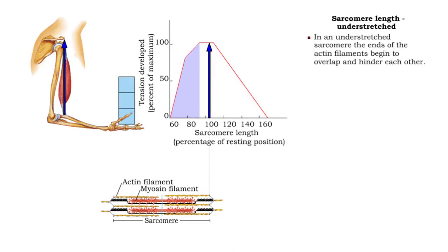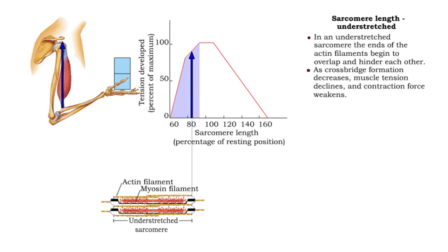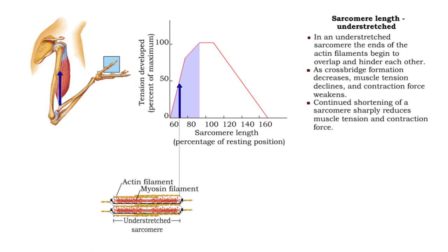In an understretched sarcomere, the ends of the actin filaments reach beyond the midpoints of the myosin filaments toward myosin heads that face in the wrong direction. This hampers the potential for crossbridges, reduces muscle tension, and weakens contraction force. If the length of a sarcomere shortens further, the thick filaments collide with the Z-discs and distort, causing muscle tension and contraction force to drop sharply.